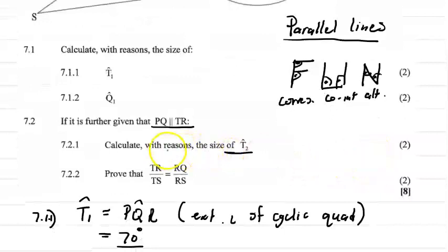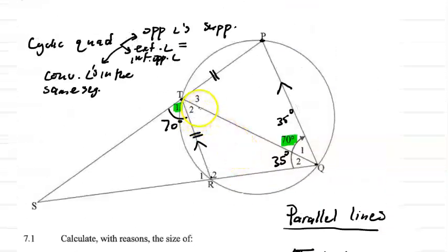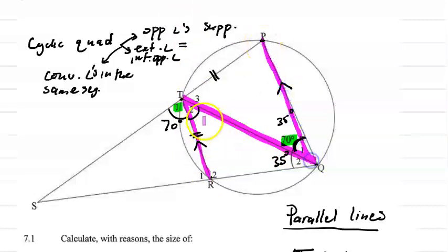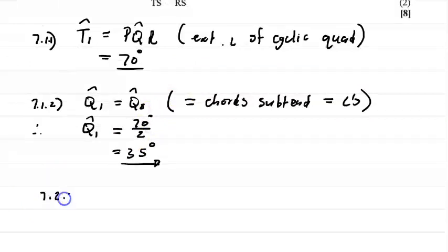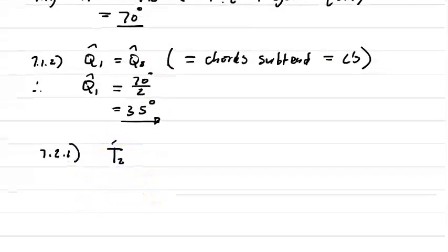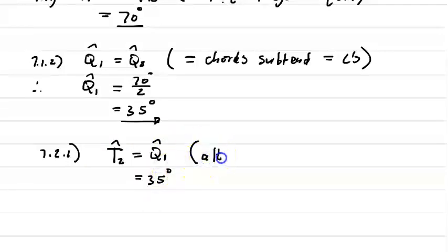For question 7.2.1, calculate the size of T2. T2 forms a Z or N shape with Q1, so they are alternate angles. Therefore T2 equals Q1 equals 35 degrees. The reason is alternate angles, and you must also state the pair of parallel lines: PQ is parallel to TR. T2 equals 35 degrees. Update the diagram.